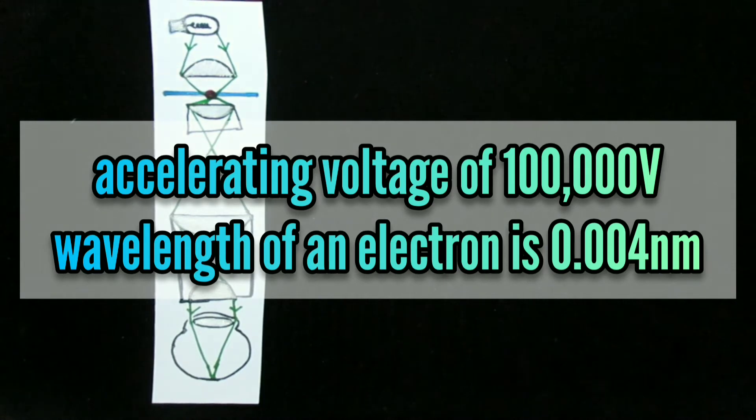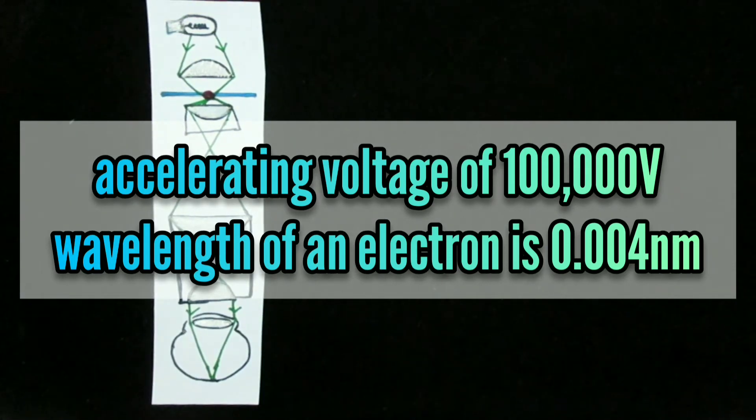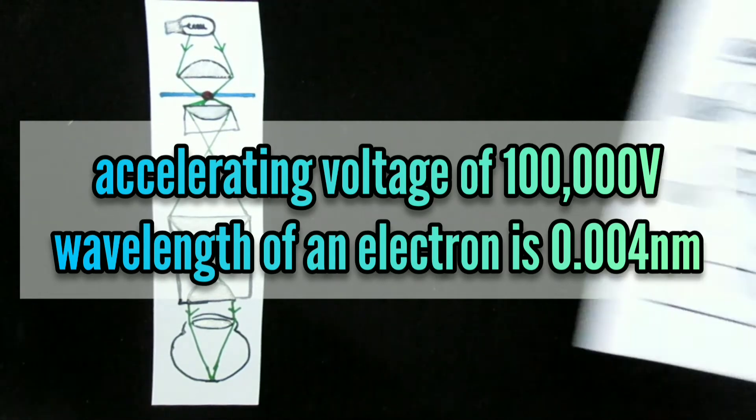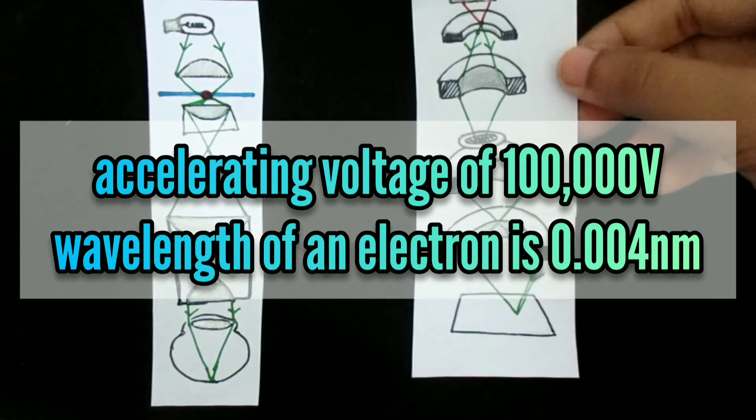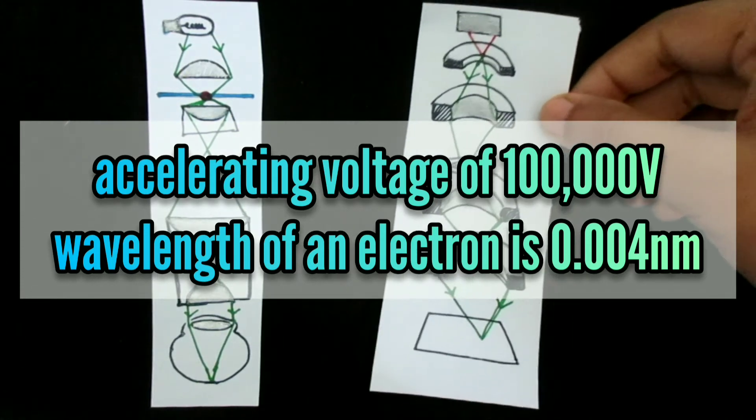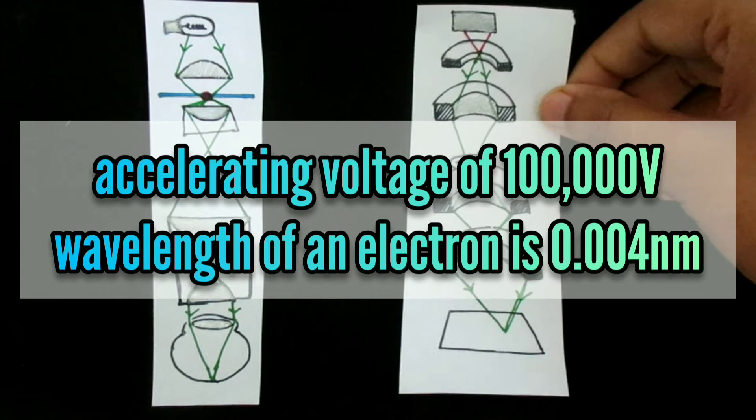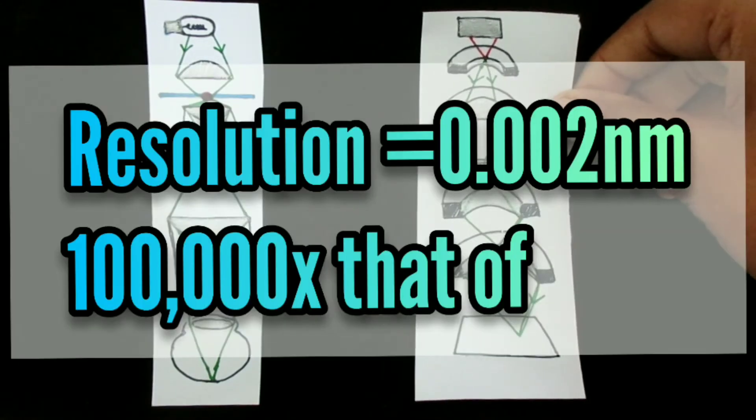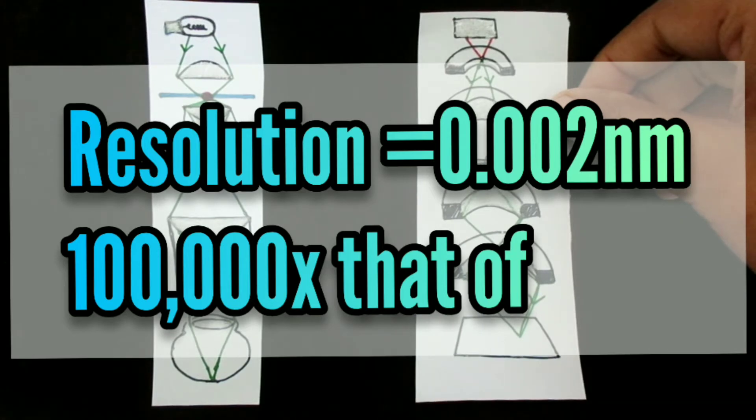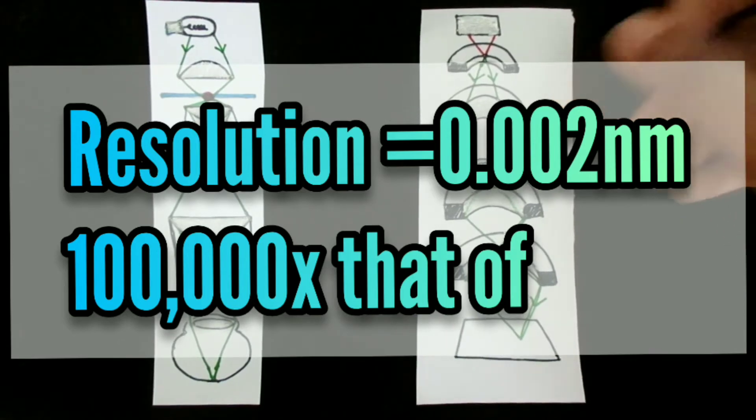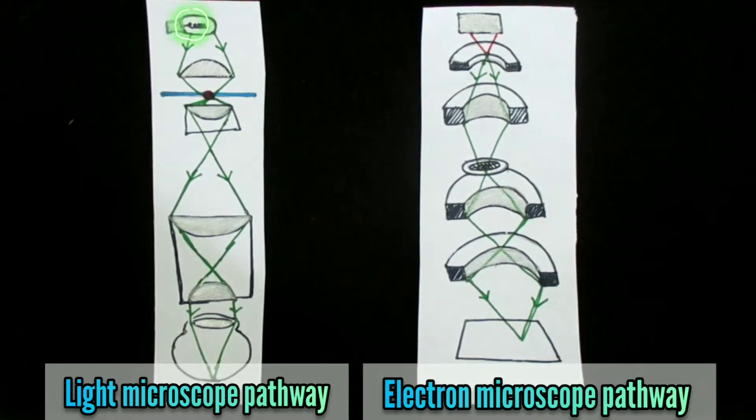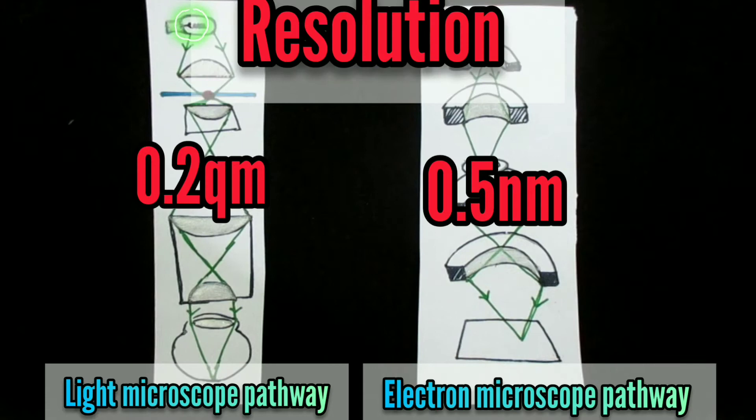The first feature is highest practical magnification. With an accelerating voltage, the wavelength of an electron is 0.004 nanometer and in theory the resolution of such a microscope should be about 0.002 nanometer which is much better than that of the light microscope. Resolution of light microscope is 0.2 micrometer whereas the electron microscope stands for 0.5 nanometer resolution.